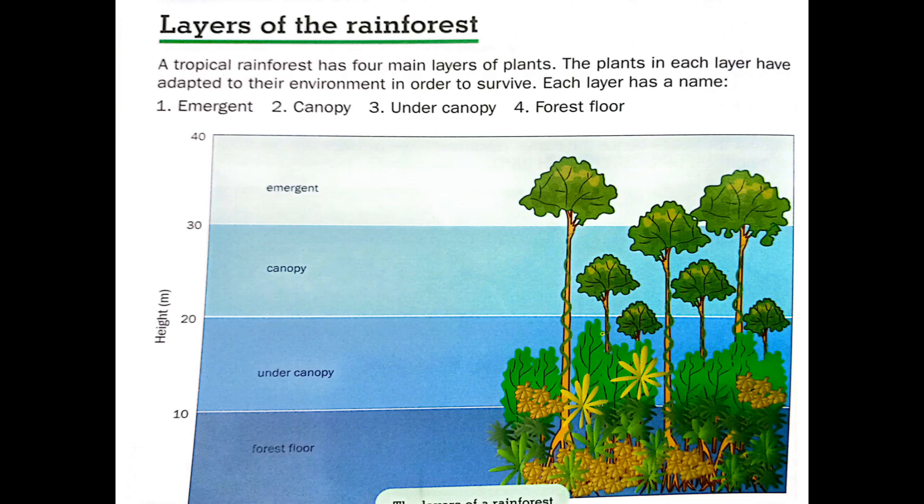Next, we have the topic of layers of the rainforest. A tropical rainforest has four main layers of plants.